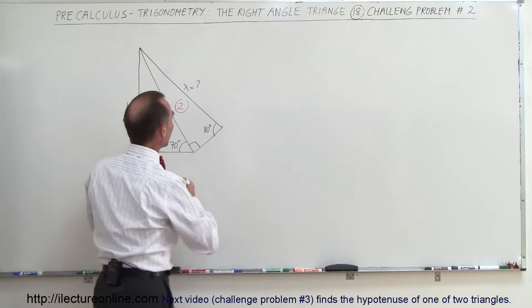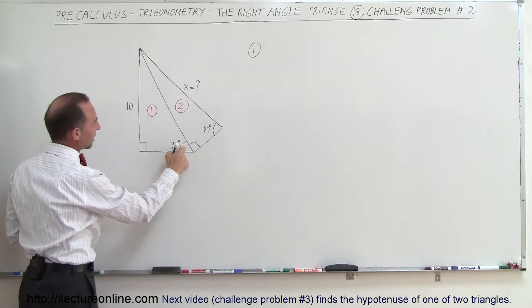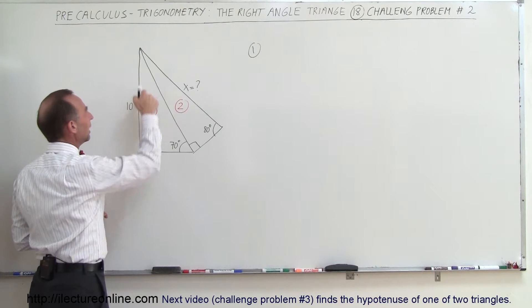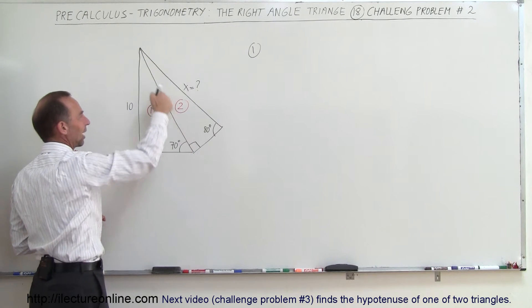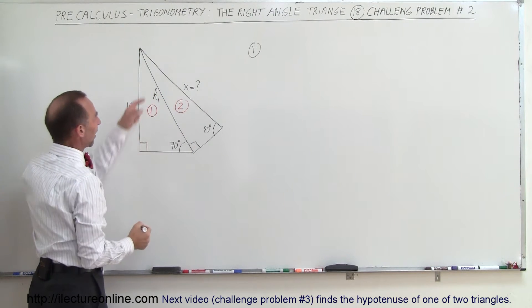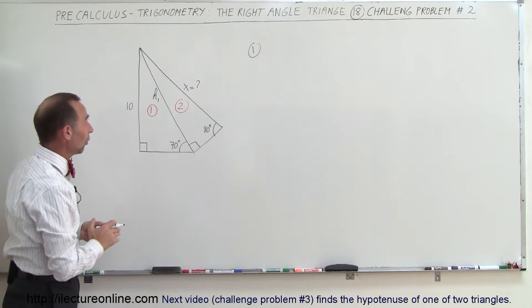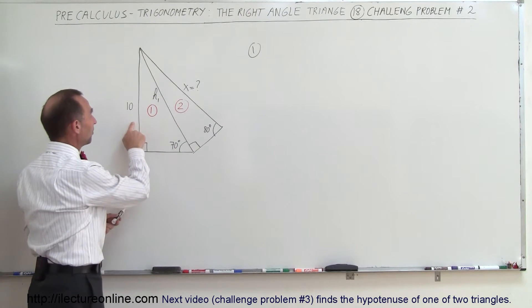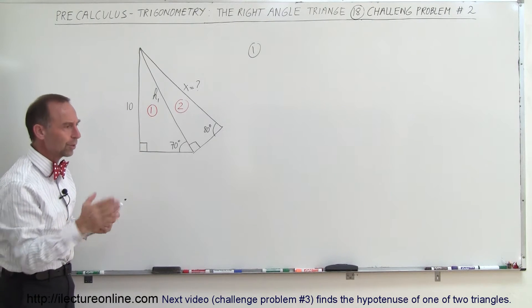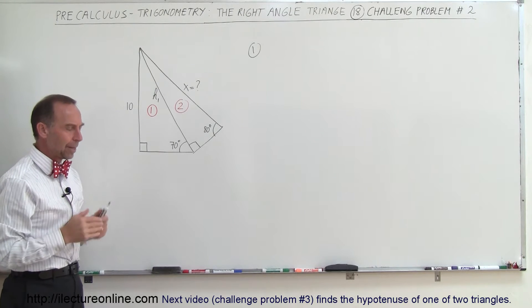For triangle number one, we have this angle right here, we know this side which is the opposite side, and we're trying to find this side here which is the hypotenuse. We'll call this h sub one — that's the hypotenuse of triangle number one. So we know the opposite side and we're trying to find the hypotenuse. What trigonometric function deals with the opposite side and the hypotenuse?